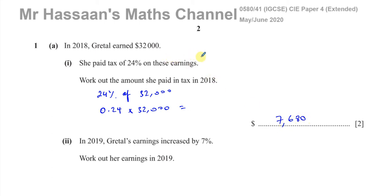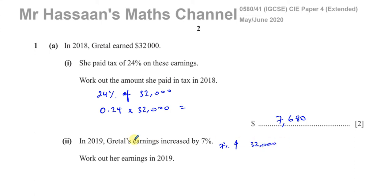Then it says: in 2019, Gretel's earnings increased by 7%. Work out her earnings in 2019. So they're telling us to increase $32,000 by 7%. It's going to be $32,000 plus 7% of $32,000.